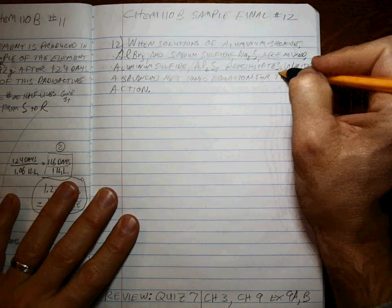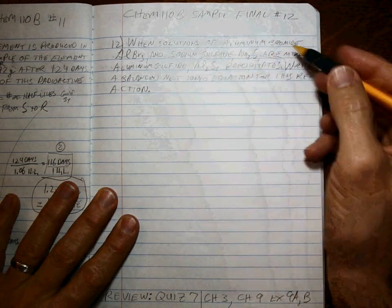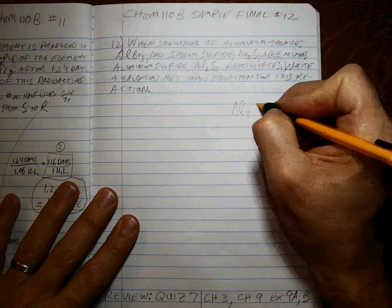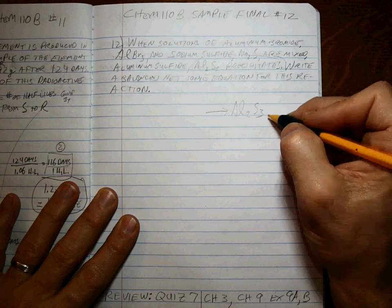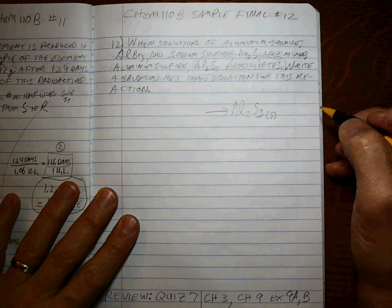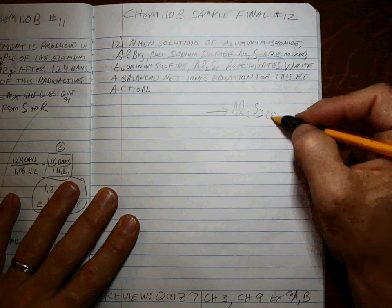Whichever the precipitate is, is the product. There's no other product, so Al2S3 has to be on the product side. If you need to, you can stick in S for solid precipitate.